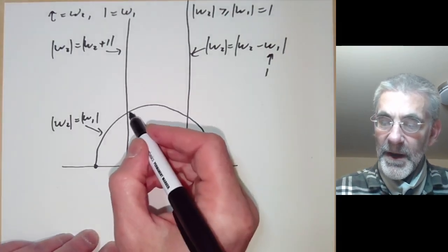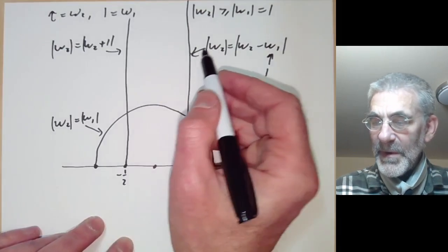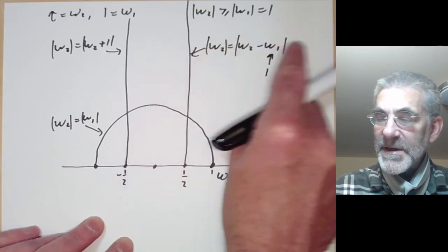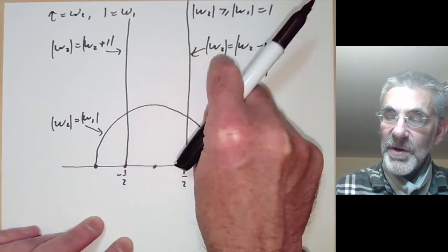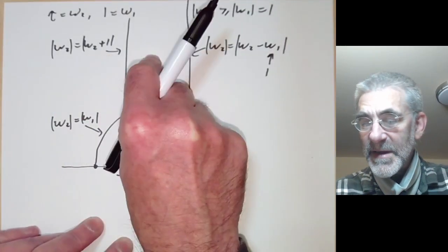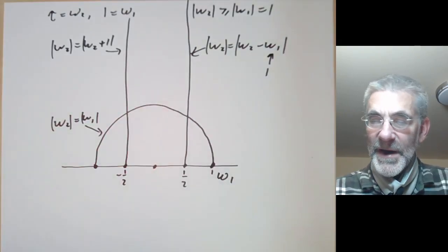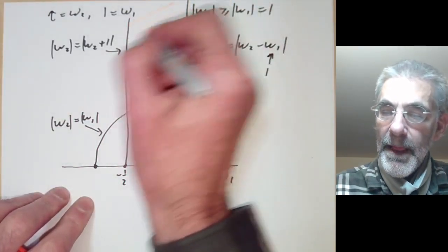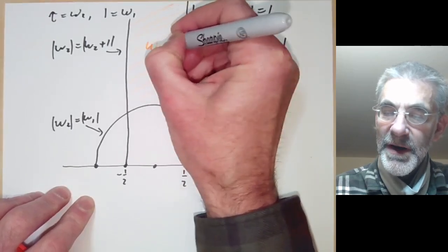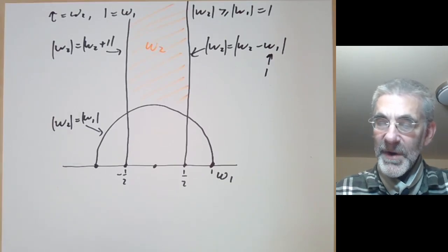So let's see what goes on at these points. So here we see that if omega-2 is to the right of this line then we can make it smaller by subtracting omega-1 from it. And similarly if it's the left of this line we can make it bigger. So we can always arrange that omega-2 lies inside this region here. And now we can ask is omega-2 unique?